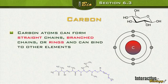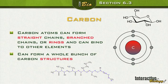Carbon atoms can form straight chains, branched chains, and rings. Here we have a branched chain with branches coming off, and here we have a ring structure. Every connection point represents a carbon atom. You can put carbon together in so many different ways to form so many different types of molecules.